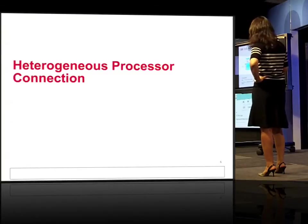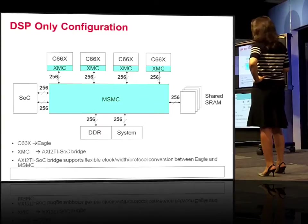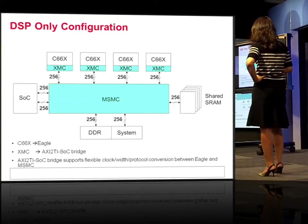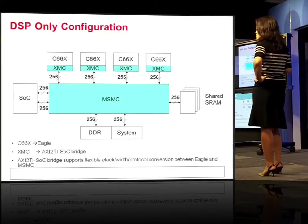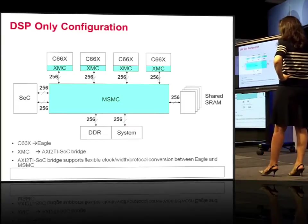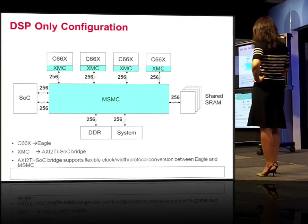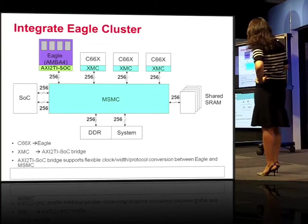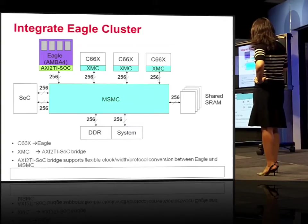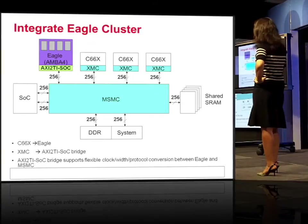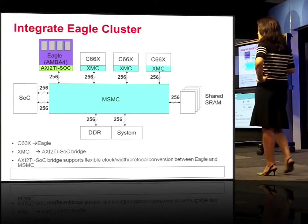How do we do the heterogeneous processor connection? This view shows DSP only — you can think of this as MISMIC 1. We have shared RAM banks in parallel. The C6X has an XMC — external memory controller — with a prefetcher, a reordering buffer, and it does a clock conversion. In MISMIC 2, the ARM A15 has an AXI-to-TI-SOC bridge used for asynchronous clock crossing, so ARM can run at 1.4 GHz while MISMIC still runs at the same frequency as the DSP and the rest of the system.